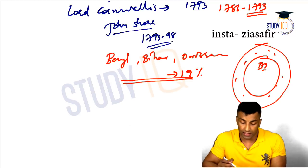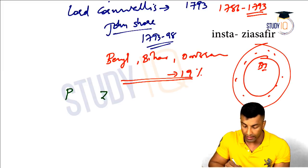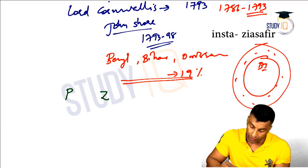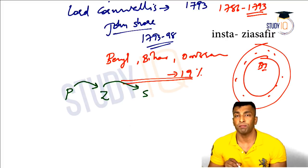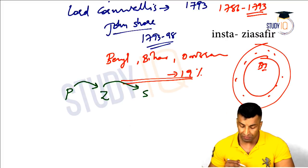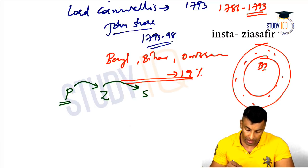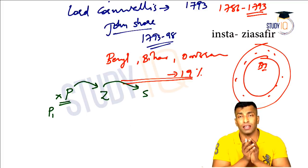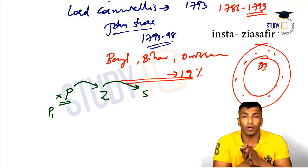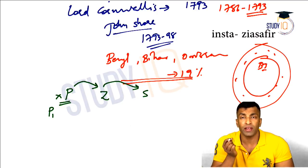The system works like this: the peasant pays tax to the zamindar, and the zamindar pays it to the state. The ownership is with the zamindars, not the peasants. If the peasant is unable to pay the tax, they will be evicted and a new peasant may be given that land.